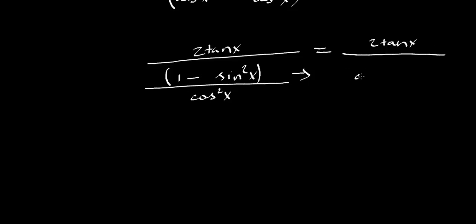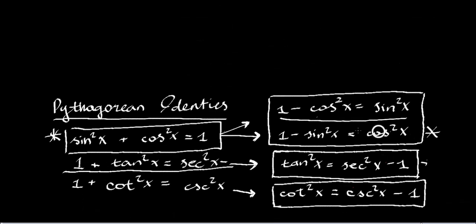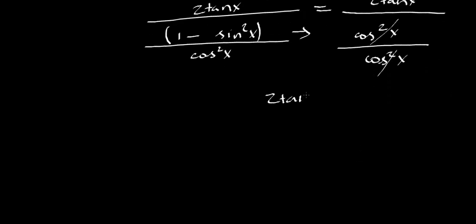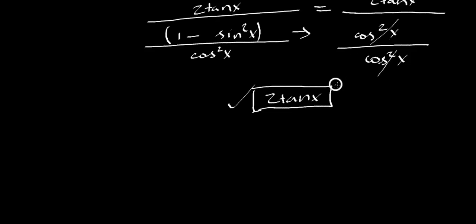One minus sin²x — that's one of your identities. That is cosine²x. So you have cosine²x over cosine²x — obviously these cancel, and you're left with 2 tan x over 1, which is just 2 tan x. You can put this into sine and cosine form, but I don't see the need, so I left it in this form.